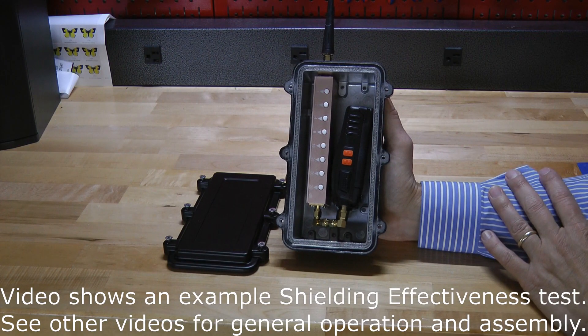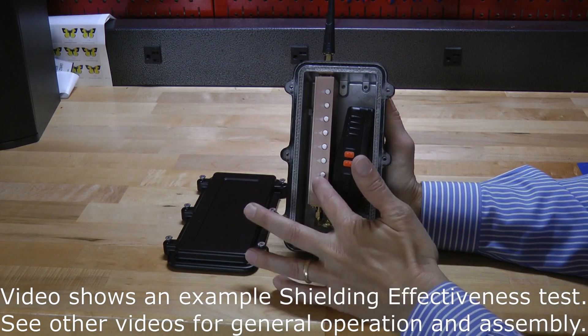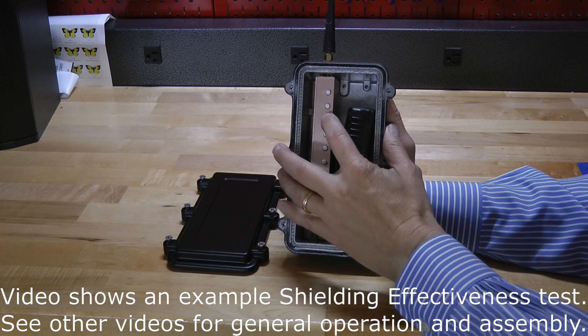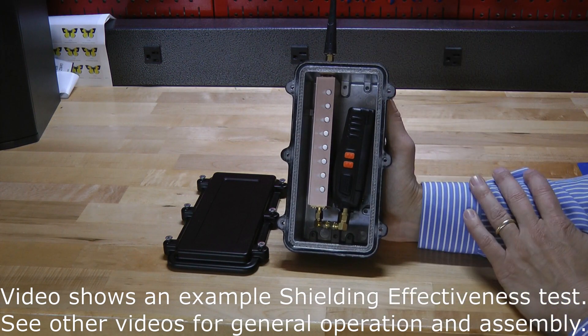Determining the shielding effectiveness is pretty easy. What you're going to do is start with all of the buttons of the attenuator fully pressed. Sometimes they're a little bit sticky when you first get them, so you have to press them kind of hard, but make sure all the buttons are fully pressed.